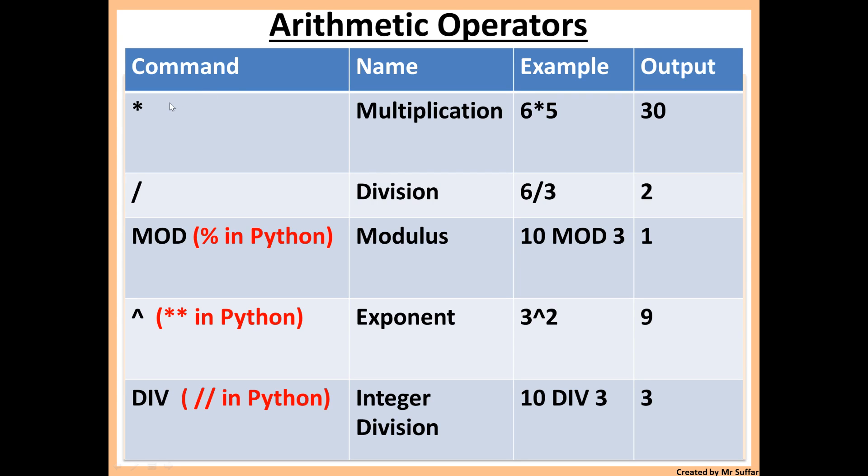Arithmetic operators: Firstly, multiplication. We use the asterisk, which is the star sign, to multiply two numbers together in pseudocode and Python. We use the slash to divide two numbers together, both in pseudocode and Python.